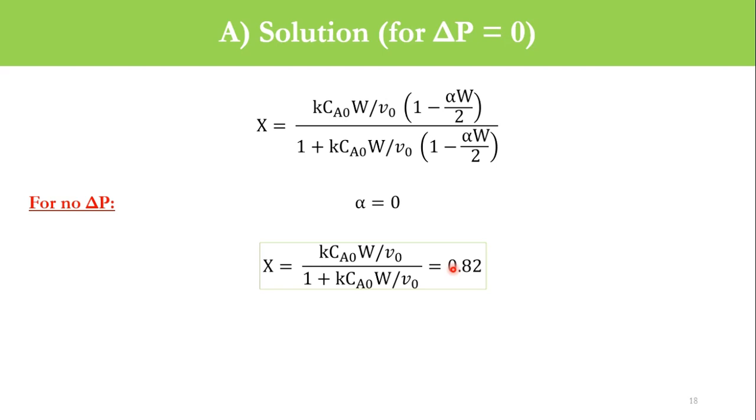It was very straightforward—we just ignore alpha in this equation. This value was 4.6, 4.6 plus 1 is 5.6, so accordingly we get 82% conversion.